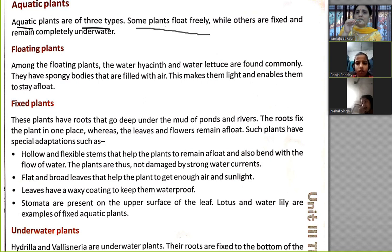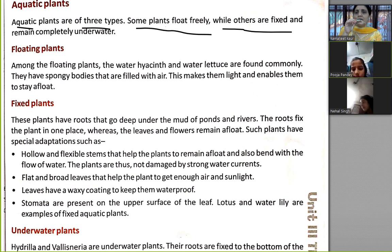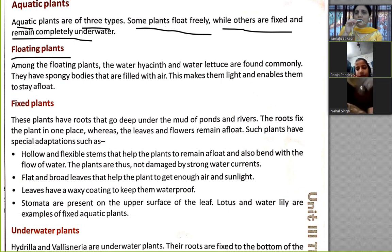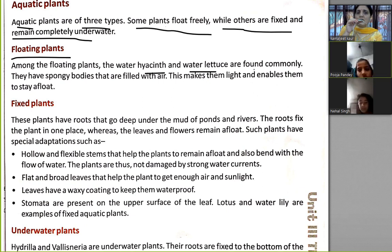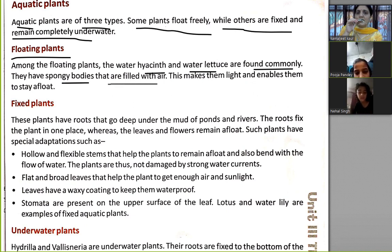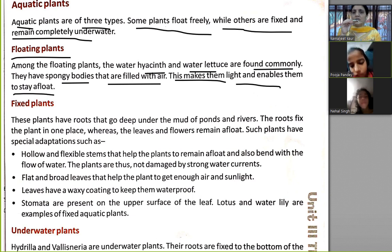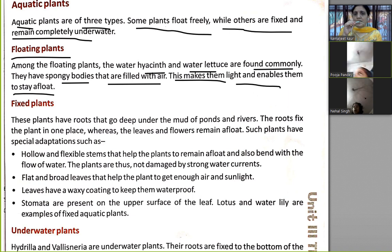Some plants float freely while others are fixed and remain completely underwater. Number one: floating plants. Among the floating plants, water hyacinth and water lettuce are found commonly. They have spongy bodies that are filled with air — this makes them light and enables them to stay afloat.